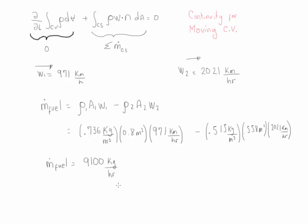Notice that for this type of problem using a moving control volume, the key task is to determine the relative velocity at each one of the control surfaces. Once you have those relative velocities and they are constant, you can substitute them into the summation of mass flow rates at each control surface to find the mass flow rate of the fuel.